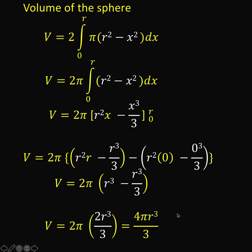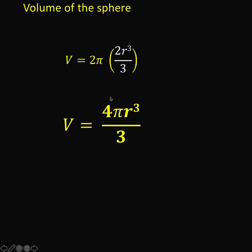And simplifying further, 2 times 2 is 4. Copy the pi. Copy the r cubed. And copy the denominator 3. And so, we now arrive at this formula, which is also equivalent to 4 over 3 times pi r cubed.